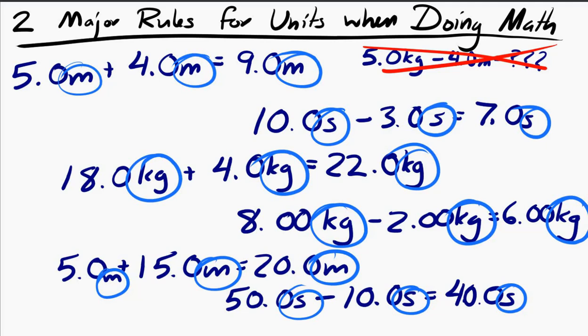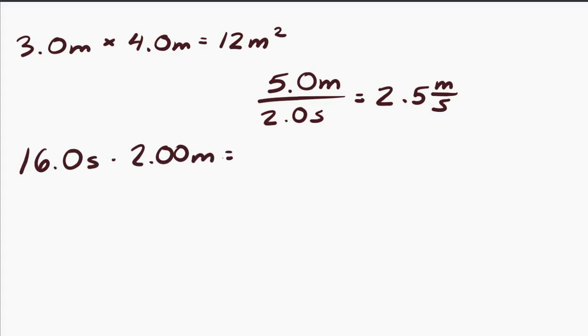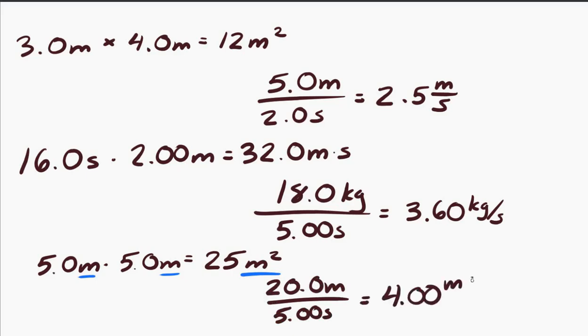Now, when we multiply or divide quantities with units, the units also multiply or divide. So, if I have 5 meters times 5 meters, well, the 5 multiplies by the 5, so I get 25. That's what the numbers do. But the units also multiply. I have meters times meters, so I get meters squared. And same with division. If I have 20 meters divided by 5 seconds, the 20 divided by the 5 gives you 4. That's what the numbers do. But also, the units divide. You have meters divided by seconds, so in the end, you get meters per second.